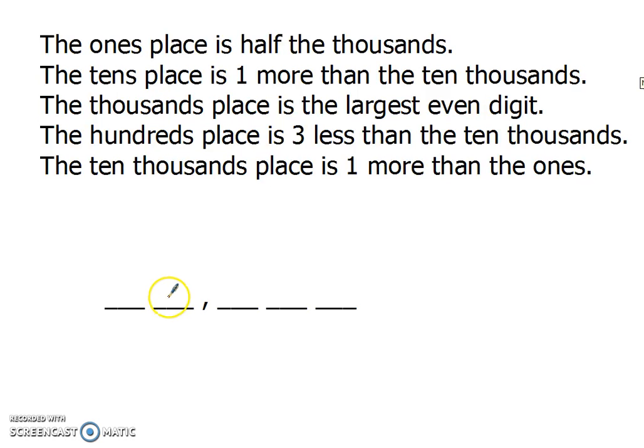Let's try another one like that. Ones places half the thousands. Don't know the thousands yet. Tens is one more than ten thousands. Don't know it. Thousands is the largest even digit. I can do that. Largest even digit, so I've got zero through nine. Nine is not even, but eight is. So the thousands place is an eight.